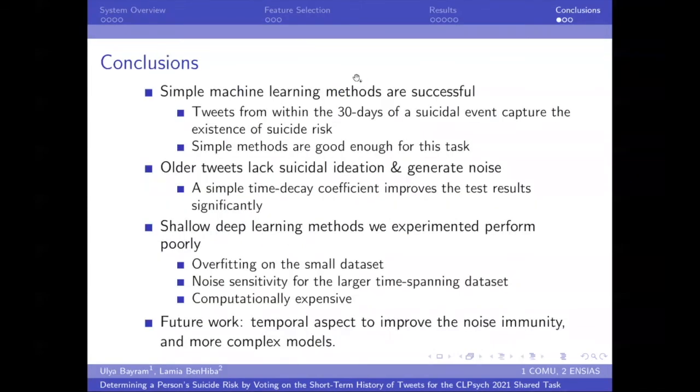These are our overall conclusions. Simple machine learning methods are successful, especially over the 30 days dataset. Voting is important and future researchers should consider that. And we also prove that older tweets lack suicidal ideation and they generate noise. And we prove that through our hypothesis and extra evaluations. And researchers should consider not using old tweets in their future research.